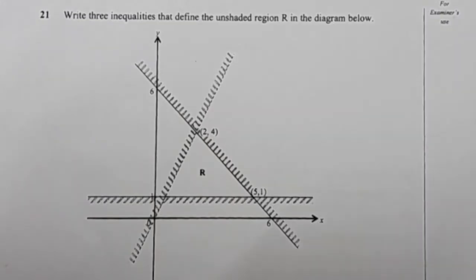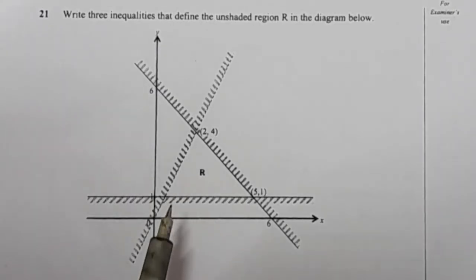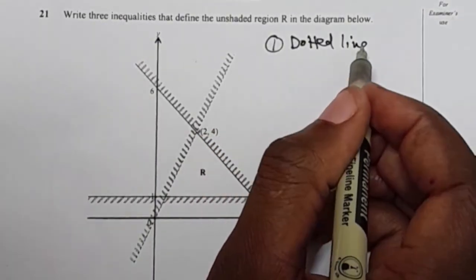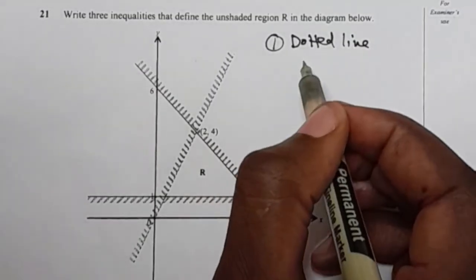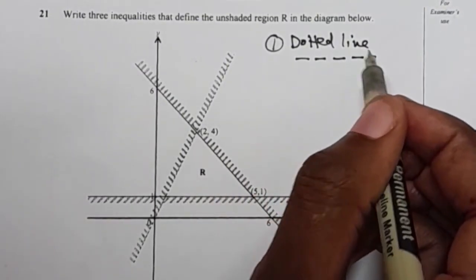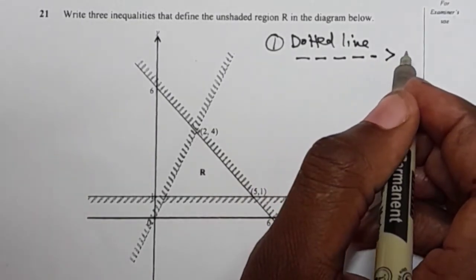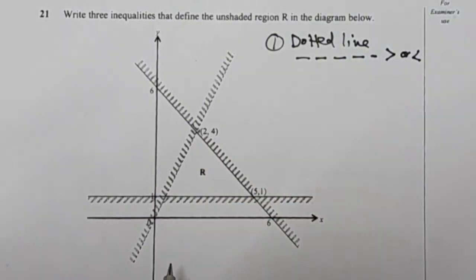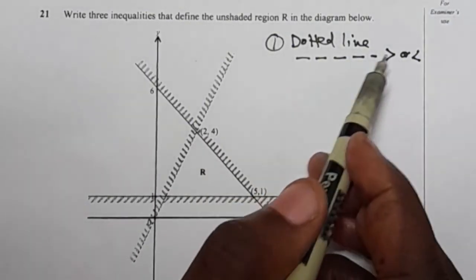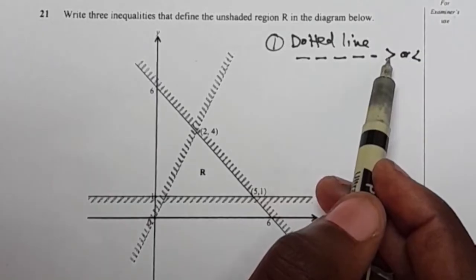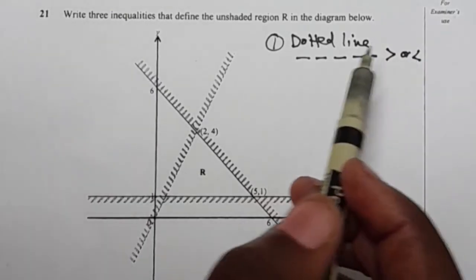Before we proceed and find the inequalities that are defining region R, there are a few things you are supposed to know. Number one: when you have a dotted line, you need to know the meaning of a dotted line. A dotted line means greater than or less than — your inequality will have either a greater than or less than symbol.